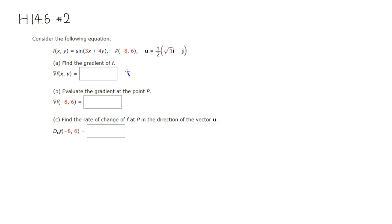So the gradient — I'm going to direct it right here. The derivative of sine is cosine, and then you leave the inside as it is, then multiply by the derivative of the inside with respect to x, so it's going to be 3. Then the partial with respect to y is very similar: derivative of sine is cosine, leave the inside function as it is, and the partial of the inside function with respect to y would be 4.